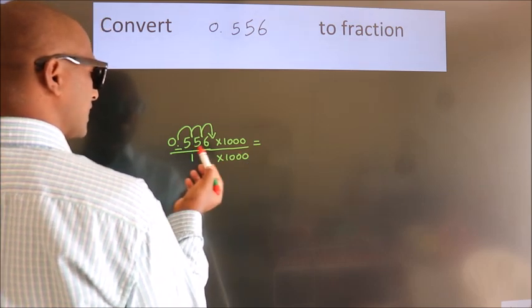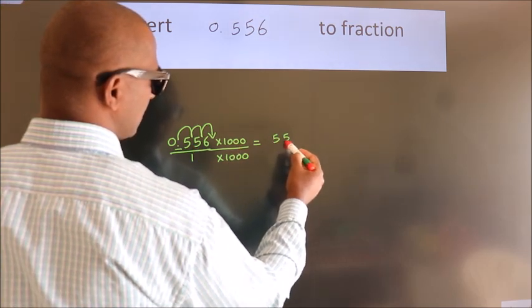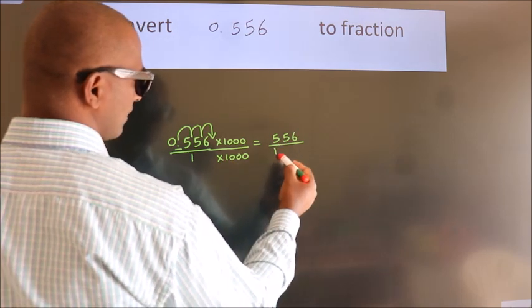0.556 into 1000 equals 556. 1 into 1000 equals 1000.